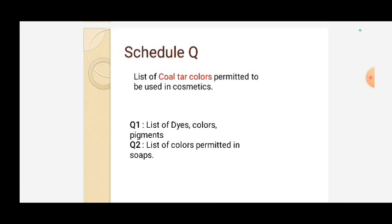Schedule Q is related to color. Schedule Q is the list of coal tar colors permitted to be used in cosmetics. There are two parts: Q1 is the list of dyes, colors, and pigments; Q2 is the list of colors permitted in shops.